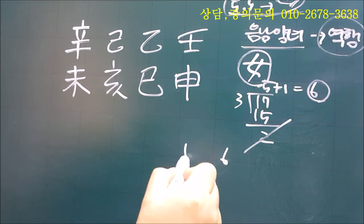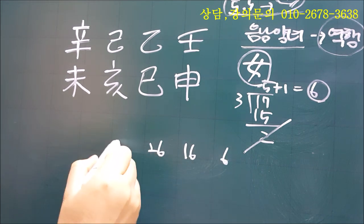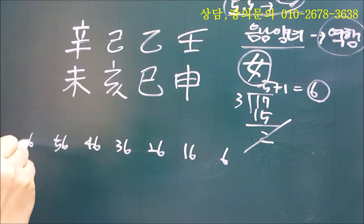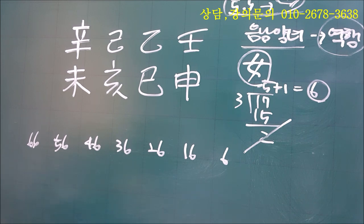즉 이 사람은 6살, 16살, 26살, 36살, 46살, 56살, 66살 이런 순으로 해서 쭉 대운 수가 나오는 부분이고요.